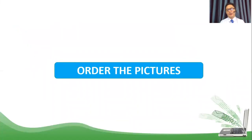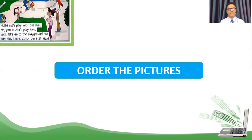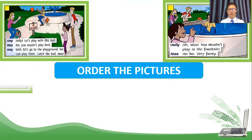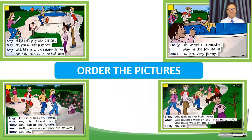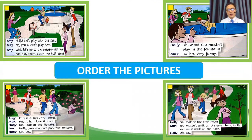Now let's move on to another activity here. Students, you are going to order the pictures for me. Put the pictures in the correct order. Now, Mr. Thanh, I will show you all of the pictures here in the story. I am going to give you one minute. You should read the words and look at the pictures carefully and write the correct number for the pictures. Which picture is number one, two, three, four? One minute. Go.